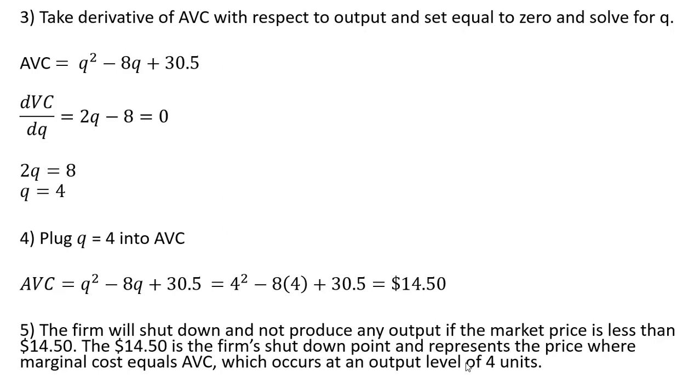Remember the firm's marginal cost curve that lies above average variable cost is the firm's supply curve. Any price that falls below the shutdown point, the firm will produce nothing or zero units of output.